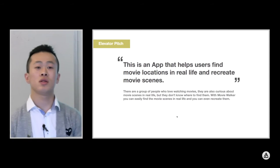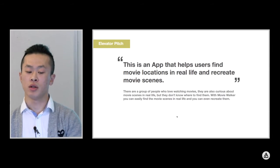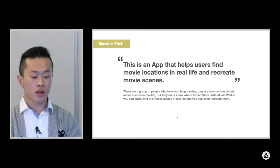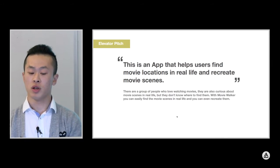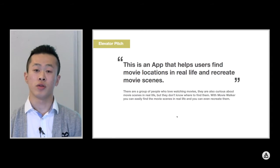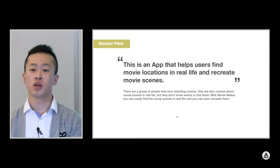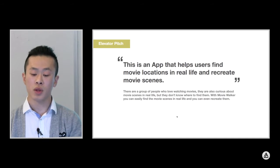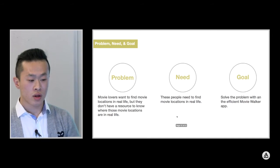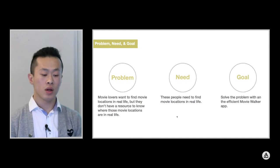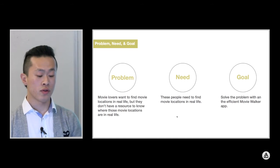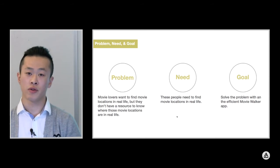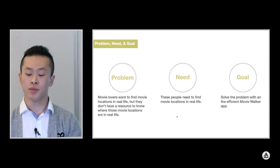One sentence to describe my app: this is an app to help users find movie locations in real life and also recreate movie scenes. There is a group of people who love watching movies so much and are curious about movie locations in real life, but they don't have any resource about movie locations. So with Movie Walker, you can easily find the movie locations in real life and even recreate the movie scenes. The problem is movie lovers want to find movie locations in real life but don't have any resource. Their need is to find those locations, and the goal is to solve that problem with an app called Movie Walker.